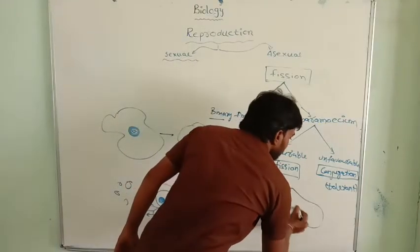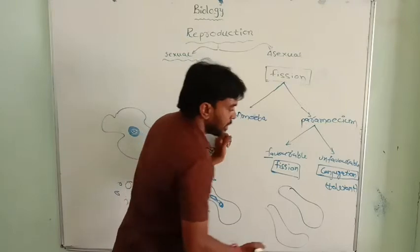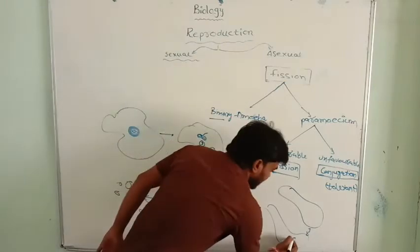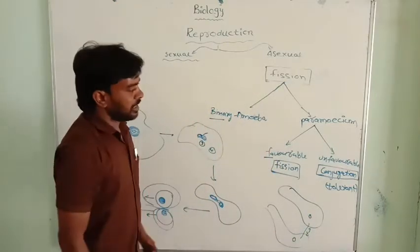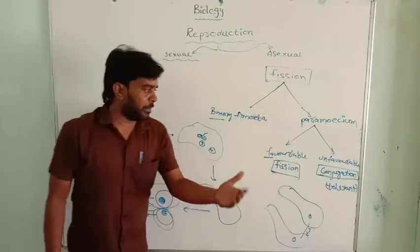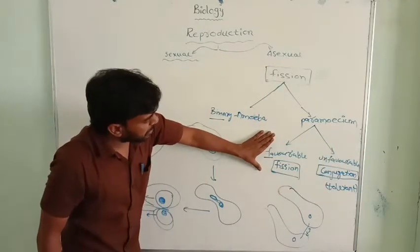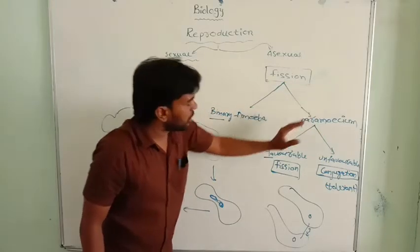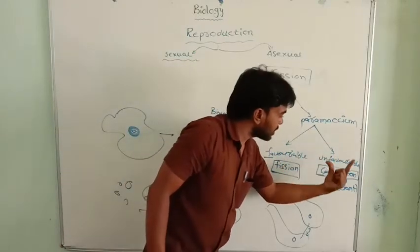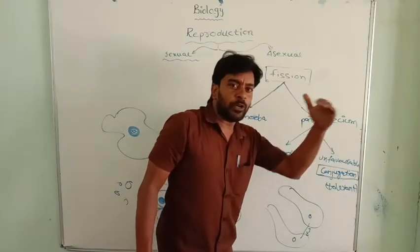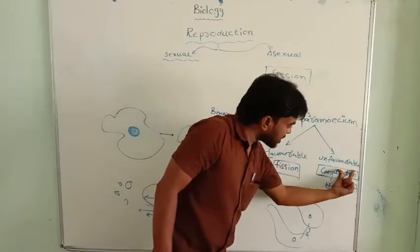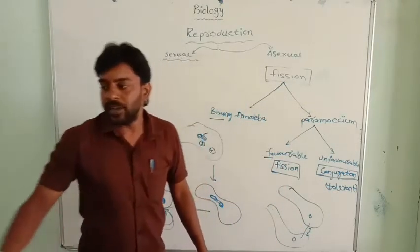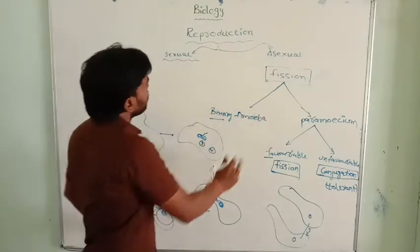In unfavorable conditions, the paramecium reproduces by conjugation. Conjugation is a mode of sexual reproduction. The two paramecium come in contact together and then share the genetic material. And then they reproduce the babies in this way. In favorable conditions, paramecium reproduces through fission. In unfavorable conditions, paramecium reproduces by conjugation. In this conjugation, the offspring are more tolerant than fission.